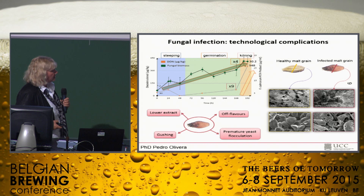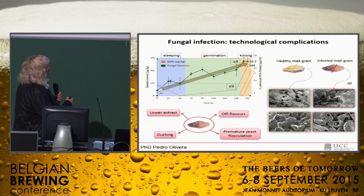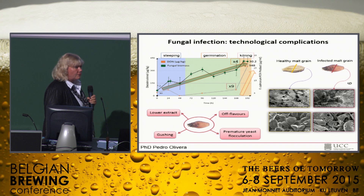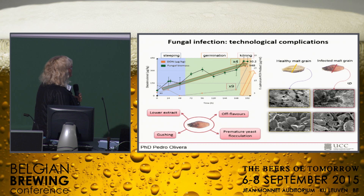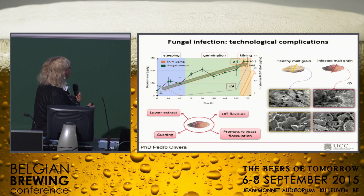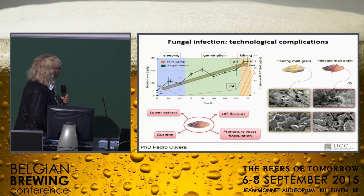One of my students, Pedro, did a good bit of work on how fungal infection actually changes the quality of malt. Here you can see we inoculated barley with infected kernels up to 20%, and then we monitored the fungal growth — you can see your fungal growth increases four times. At the same time we also measured the mycotoxin content, and in this case it went up by nine times. What we also detected was that we generated a lower extract, got off-flavors, premature yeast flocculation, and gushing.